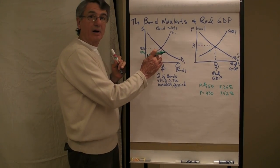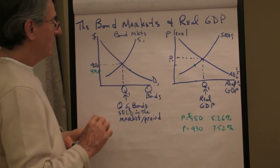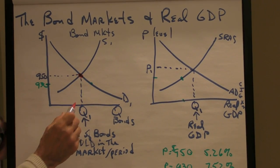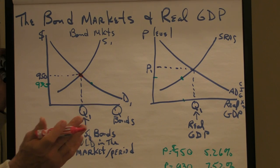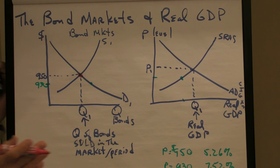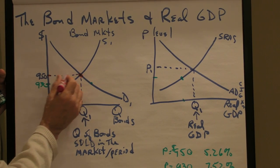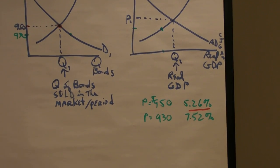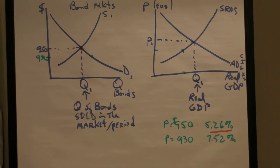So now it's time to connect the bond markets with real GDP. And what we have to remember is that this is an interest rate mechanism. It reflects or determines the interest rates in the economy. So if for instance we have a bond price of $950, that's an interest rate yield of 5.26%.